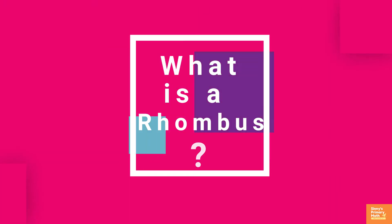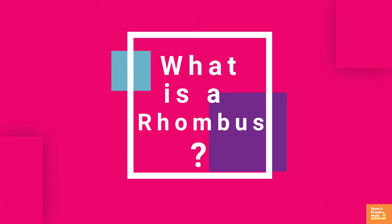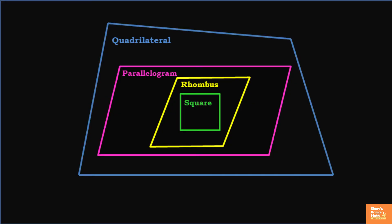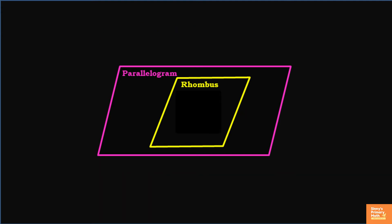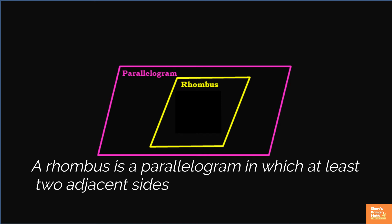What is a rhombus? You know, quadrilateral is a closed plane figure having four sides. A rhombus is a quadrilateral with four sides of equal length. If we define a rhombus based on a parallelogram, a rhombus is a parallelogram in which at least two adjacent sides are equal in length. A parallelogram has opposite sides parallel to each other.